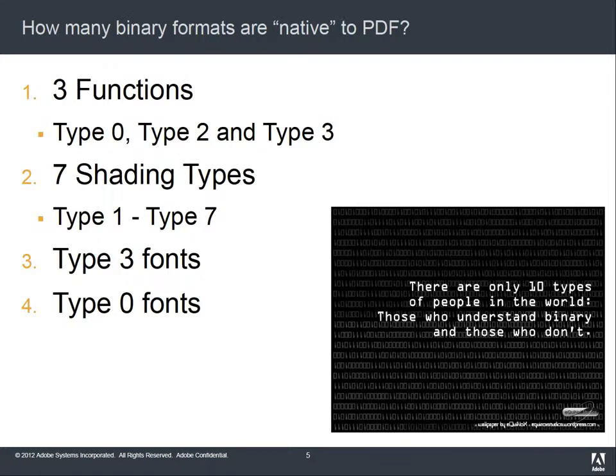We also have binary formats as well. All the different function types, seven different shading models — these are just binary formats native to PDF, ones that we created as part of the PDF file format, not ones we adopted from elsewhere. Some of those we made up, like CMAPs and Unicode tables, and some we adopted, like JavaScript and ASN1. These are purely PDF-centric binary formats.